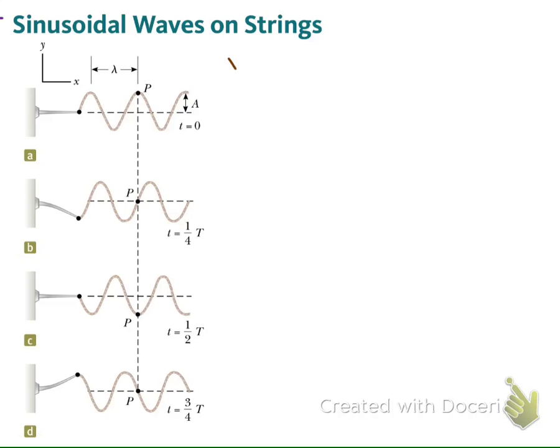It has the form of y(x,t) equal to A sin(kx minus ωt), because we are looking at the wave that moves to the positive x direction, plus the phase constant φ.